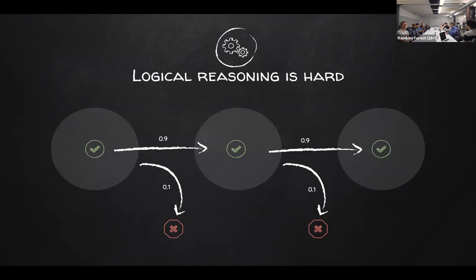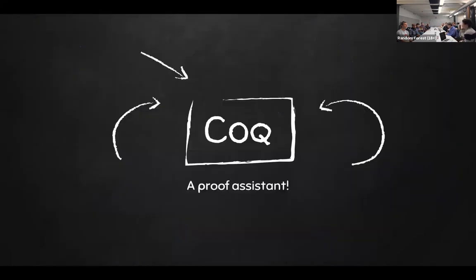What I really like is to have complete confidence that my results are correct. Since you all are Haskell programmers, you probably share that — that's why you use Haskell, because you like strong type safety and things like this. So that's what Coq is for me. Coq is a proof assistant. For me, it's like an extension of my brain, an extension of my own ability to reason logically.